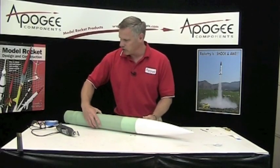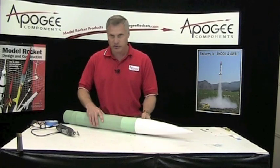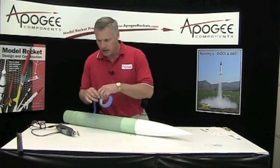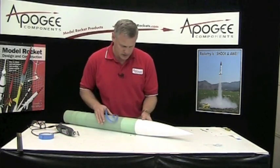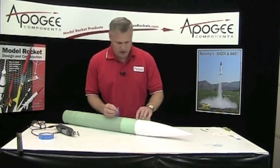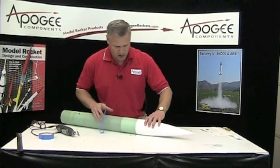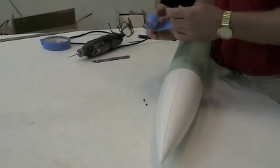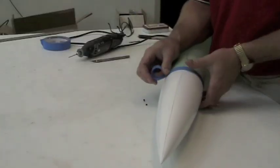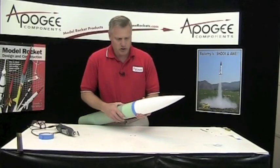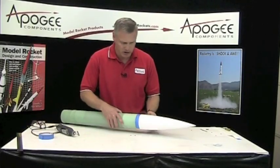The next thing we want to do is tape the nose cone on so that it stays in place. I've already pre-drawn lines on the tube and I'm going to be putting in three holes. This makes sure that the nose cone is not going to move around on me.